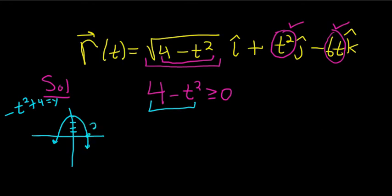This is 2 because 4 minus 2 squared is 0, and this is negative 2. If you plug in 2 or negative 2 here, you get 0. So these are the x-intercepts.